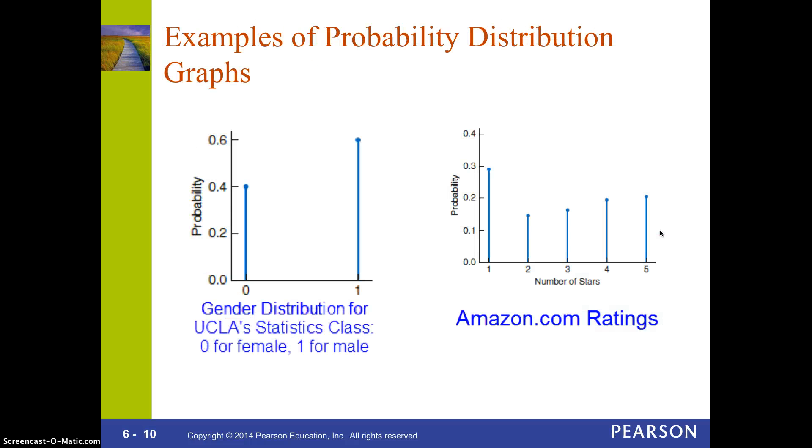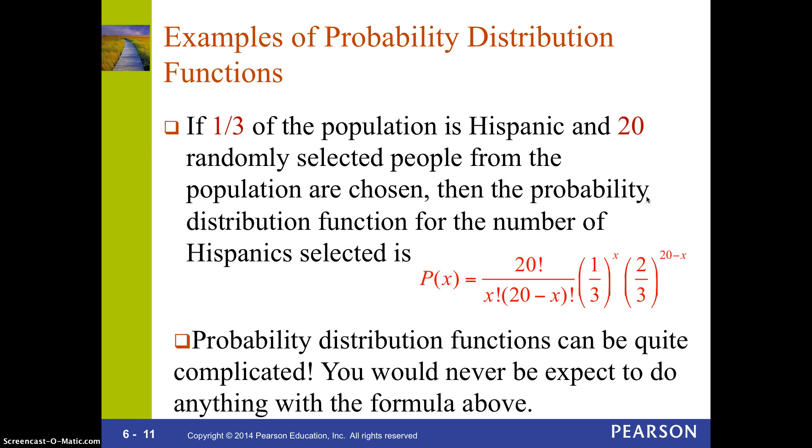So, here's some examples of graphs of probability distributions. Again, that are discrete. Here, they did gender distribution. If you remember back in Chapter 1, we talked about coding data. So, in this case, they coded it. Zero was the females. So, we can see there was about 40% females and about 60% males. Over here, I have Amazon.com ratings. And when you rate something, you either give it a 1 through a 5. You can't give it like 2 and a half. So, these aren't averages. These are actually what people rated, the actual rating of it. So, you know, so just lines going up. So, almost 30% gave whatever it was a 1 star and about 20% gave it 5 stars.